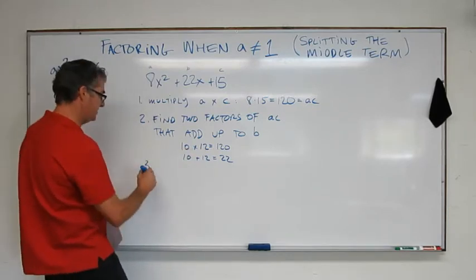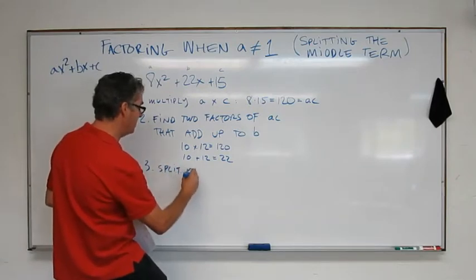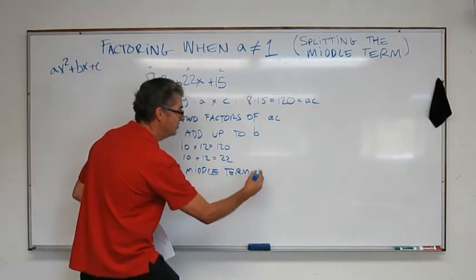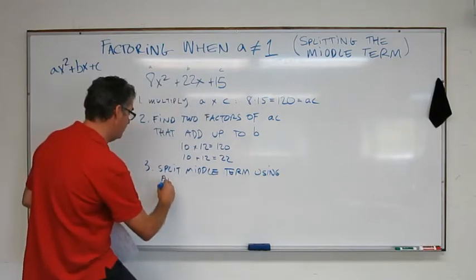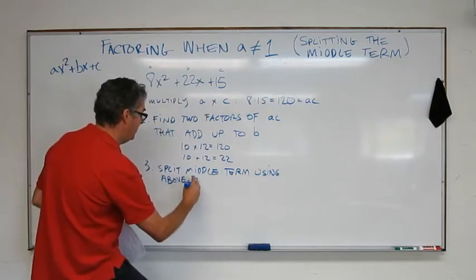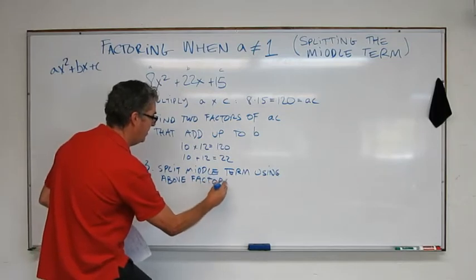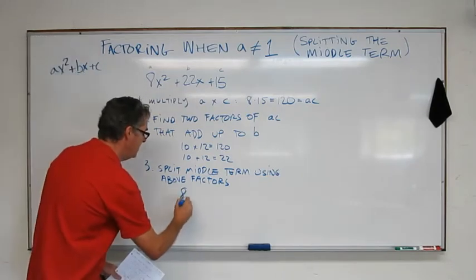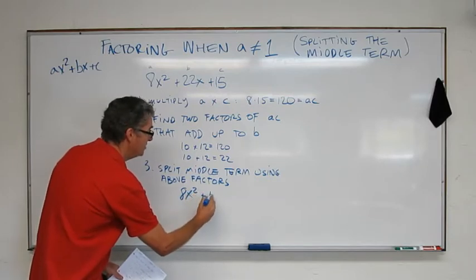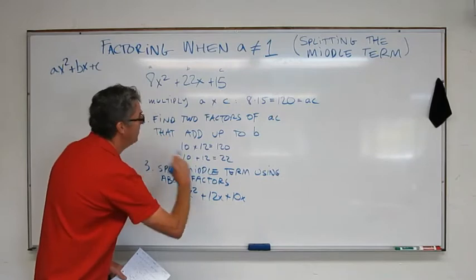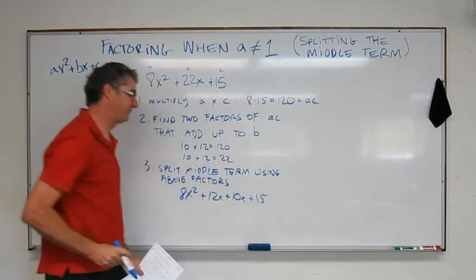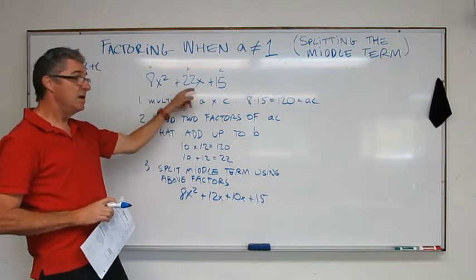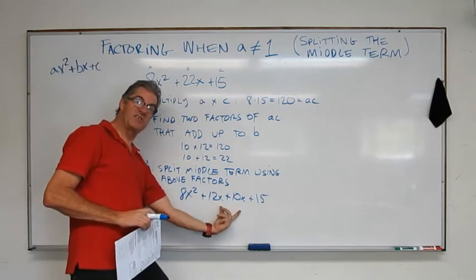Step 3 is split middle term using above factors. Okay, so my middle term is 22x. What this means is I'm going to rewrite my expression 8x squared plus 12x plus 10x plus 15. Okay, so this is just going backwards. These are like terms. I could combine them, but I'm splitting that one, so I've written these two factors out.